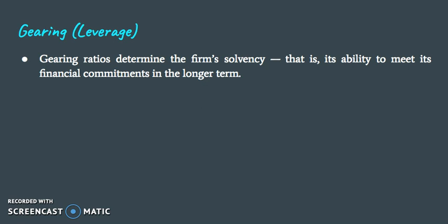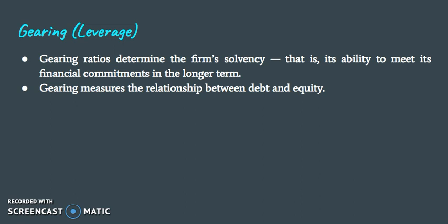Gearing ratios determine the firm's solvency — that is its ability to meet its financial commitments in the long term. If it was able to meet these commitments in the short term, it would be its liquidity. Ability to meet its financial commitments in the long term is solvency. Gearing measures the relationship between that debt and equity mentioned earlier.